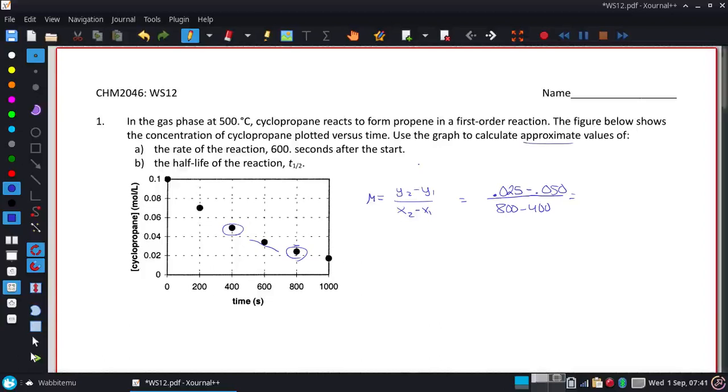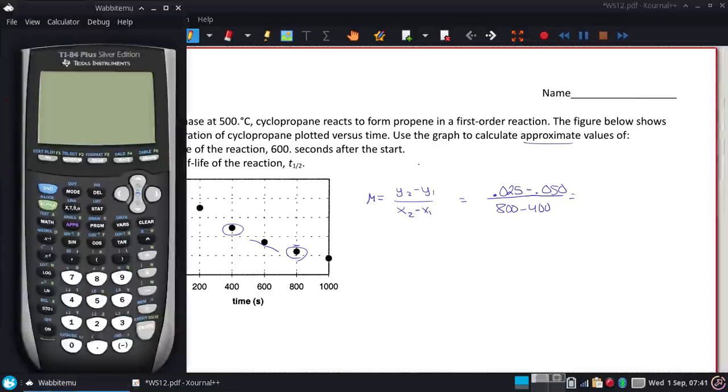0.025 minus 0.05, and then essentially divide by 400.